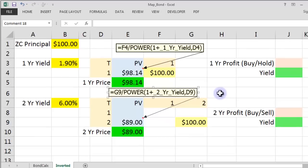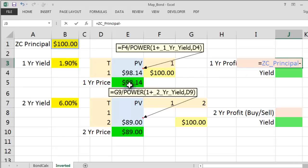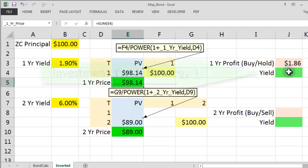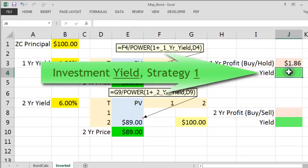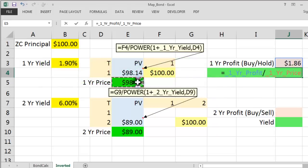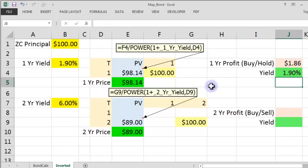We can work out our profit and loss and yields for the two different situations. We buy at 98.14 then redeem at 100 one year later in the first situation. That gives us a profit of 1.86 on the year. The yield then will be the profit divided by the amount we invested, which gives us 1.9% yield.